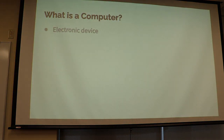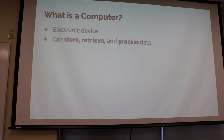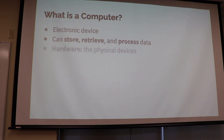Continuing on, a computer at its basic work is an electronic device. Because this is systems, we're going to add: it's a system of things. It can store, retrieve, and process data. As a system, it has things that can provide inputs — you have a keyboard, mouse, touch screen, whatever it is. You have inputs, then you can process those things and you have outputs. At the very basic definition of a system, the computer takes inputs, does something with them, and provides an output.